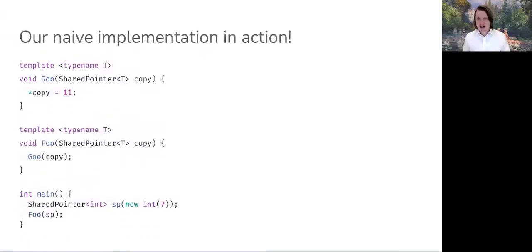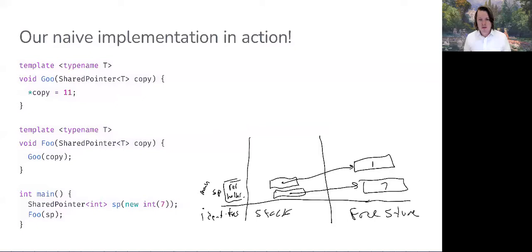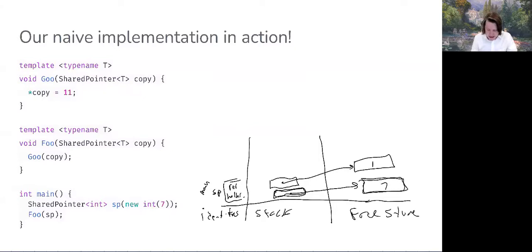Let me draw this out to show the naive implementation in action. When main launches, a new shared_pointer<int> named sp is created, with its holder pointing to a new integer on the free store initialized to seven. sp's reference_count pointer points to an integer on the free store holding the value one. We then call foo passing sp by value, which invokes the copy constructor to initialize foo's copy parameter with a copy of sp.